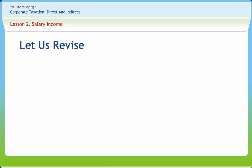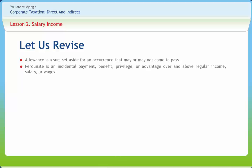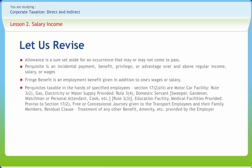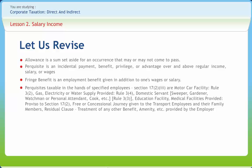Let's revise what we have studied. An allowance is a sum set aside for an occurrence that may or may not come to pass. A perquisite is an incidental payment, benefit, privilege, or advantage over and above regular income, salary, or wages. A fringe benefit is an employment benefit given in addition to one's wages or salary.